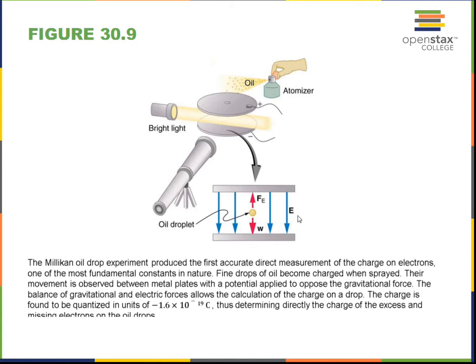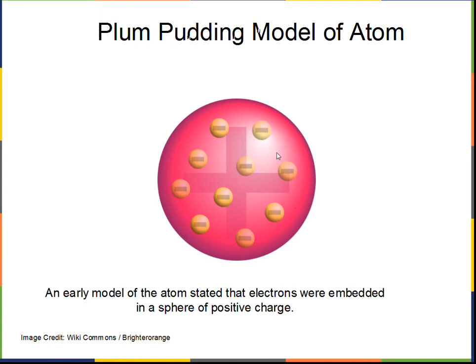We already discussed this a little bit earlier in the semester, but once the charge of the electron was determined, then the mass of the electron was determined. It is an extremely small number, roughly 9 times 10 to the minus 31 kilograms. You should look up that value.